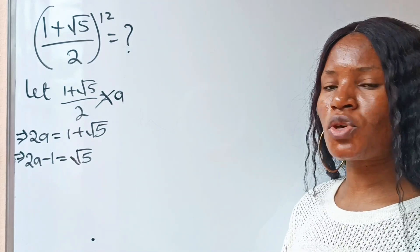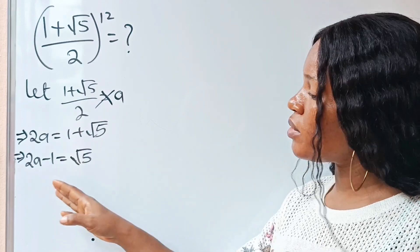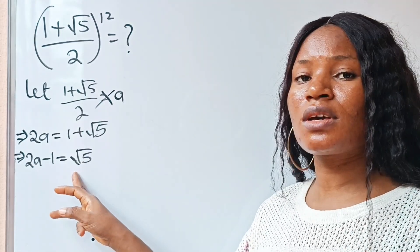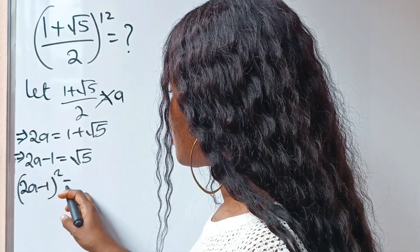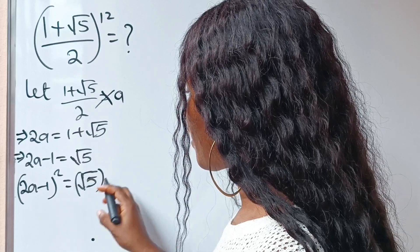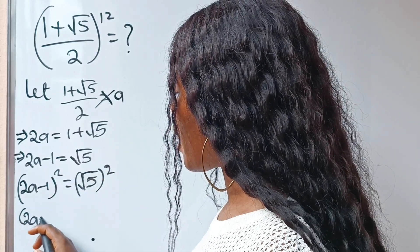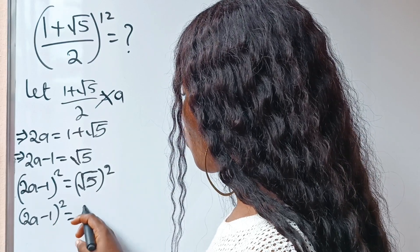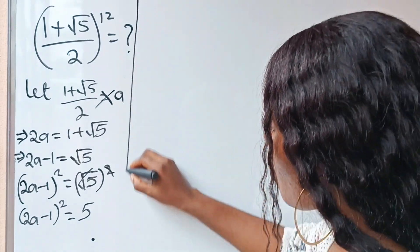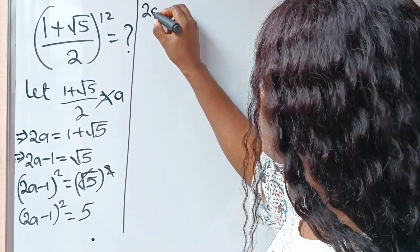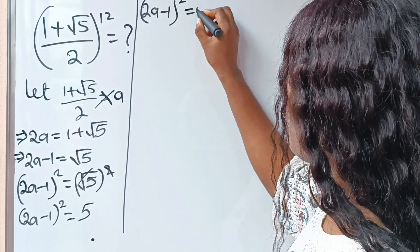Alright. So in order to get a number here, let's square both sides so that we can remove the root sign. So if we say (2a − 1)², this should be equal to (√5)², which gives us (2a − 1)² = 5, because the square cancels the square root.